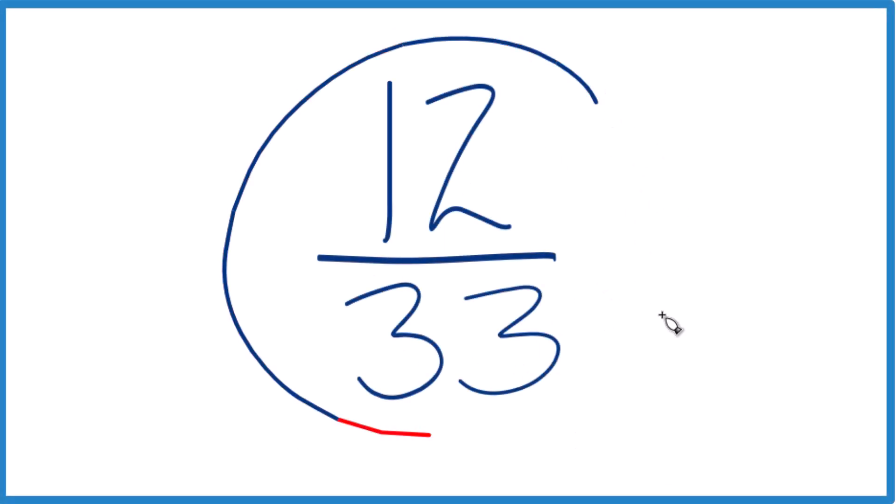Let's simplify the fraction 12/33. So we have 12 over 33, and to simplify that, we need to find a common factor, something that goes into both 12 and 33 evenly.